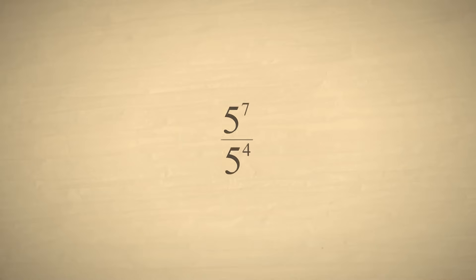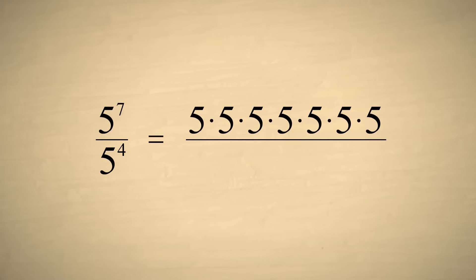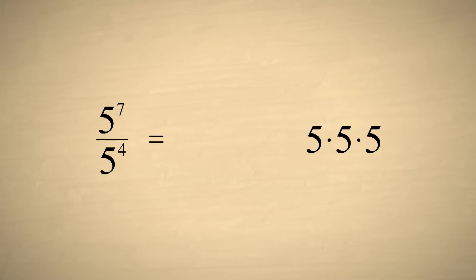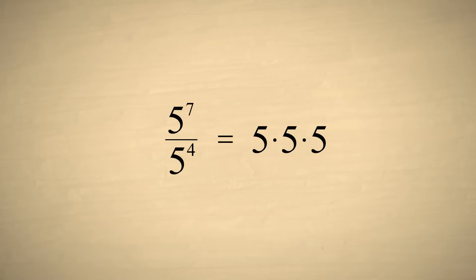But what happens if we divide two exponential expressions with the same base? Let's try as an example: five to the seventh power divided by five to the fourth power. This is the same as seven fives multiplied together, divided by four fives multiplied together. We can simplify this fraction by cancelling four fives in the denominator and four fives in the numerator. After cancelling, we are left with three fives multiplied together. So five to the seventh power divided by five to the fourth power is five to the third power.